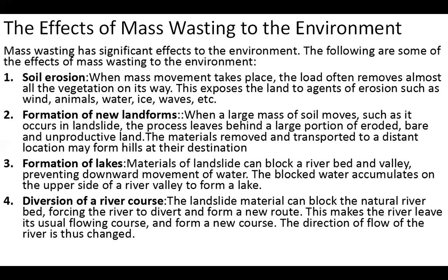The fourth effect is the diversion of the river course. Since landslide material can block the natural riverbed, it forces the river to deviate and form a new route. This makes the river leave its usual flowing course and form a new course, as the direction of flow of the river has changed because of the mass wasting activities.